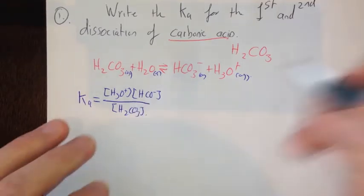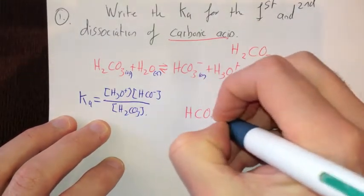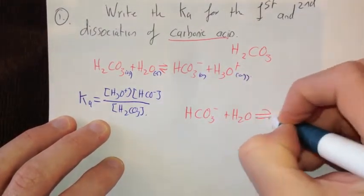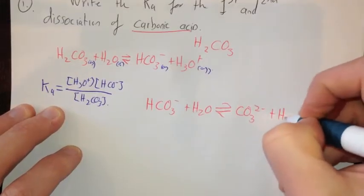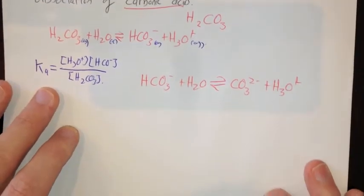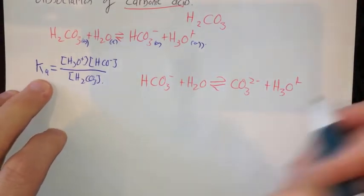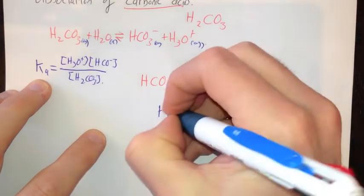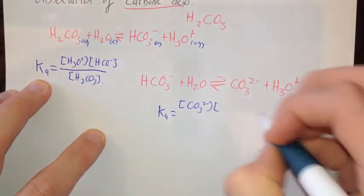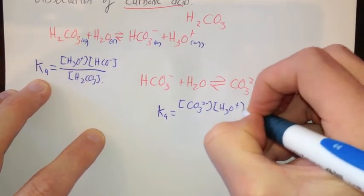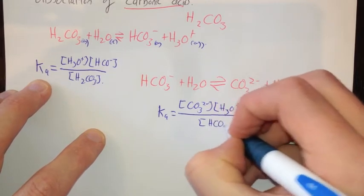Our second ionization obviously involves this guy here, so it's HCO3- plus H2O goes to CO3 2- plus H3O+. And this is our second dissociation. Therefore our Ka value for the second dissociation, Ka equals our products divided by the concentration of the acid that we're starting with.